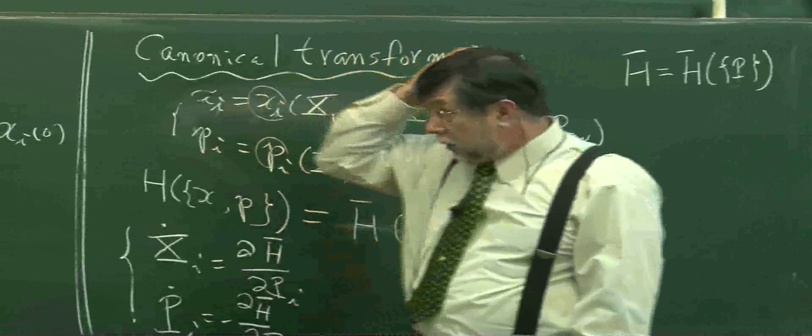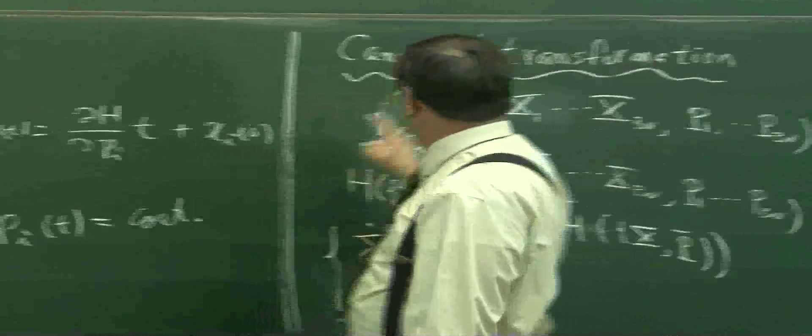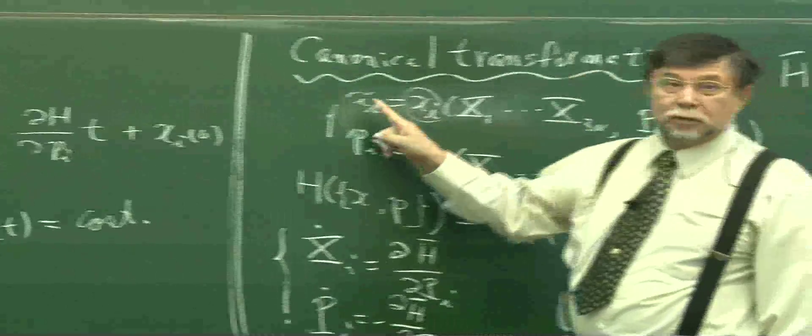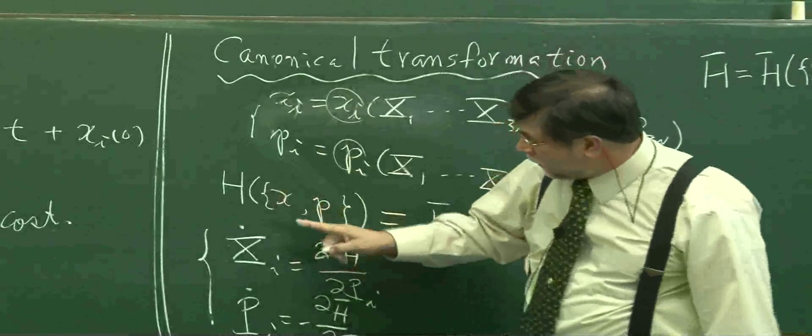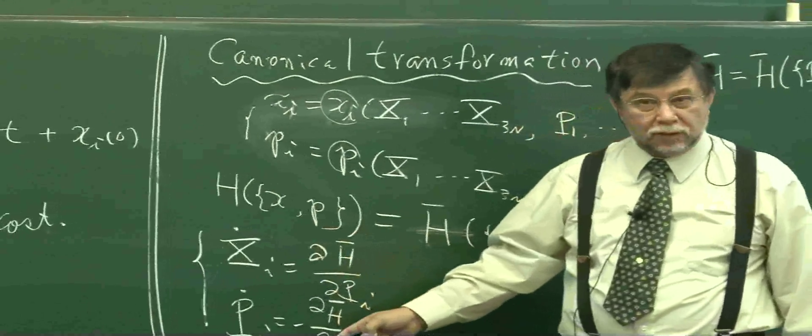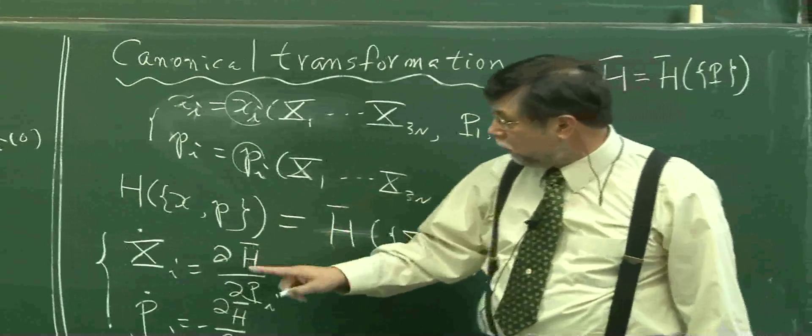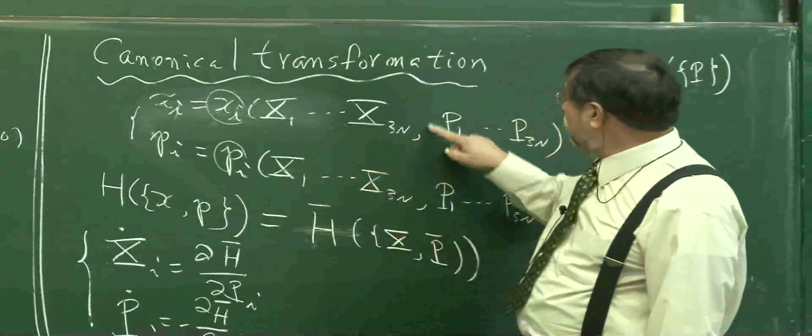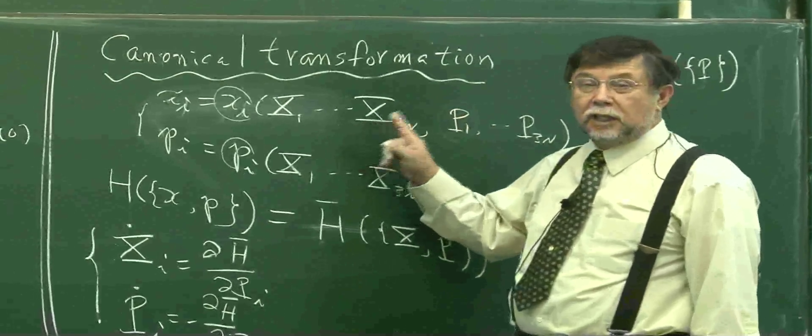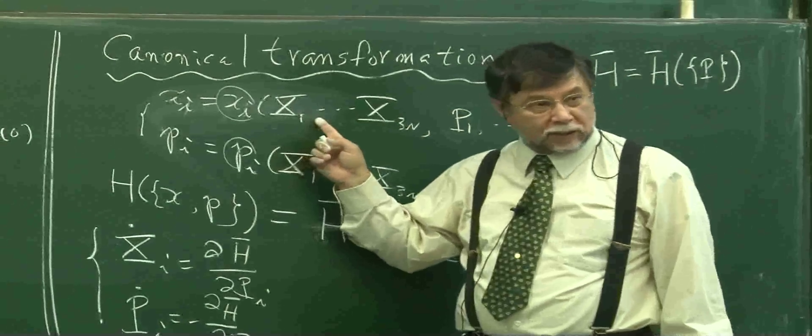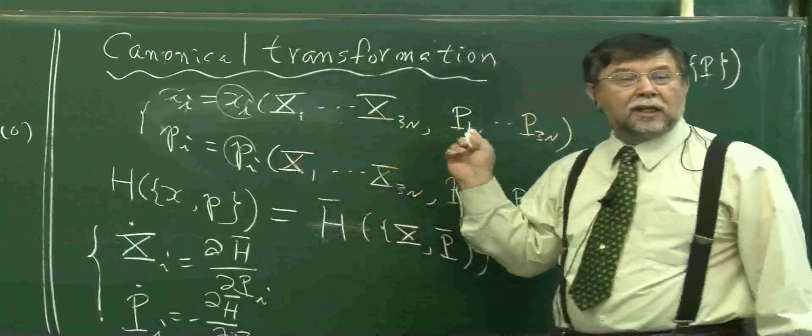Originally, this was coordinate and momentum. If it satisfies this equation, in that case, it's called this new set is a generalized coordinate and generalized momentum.